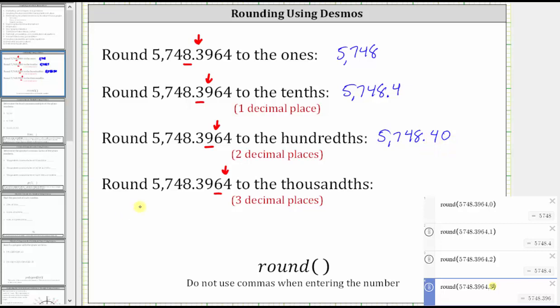And then finally, rounded to the thousandths place value, we have 5748.396. I hope you found this helpful.